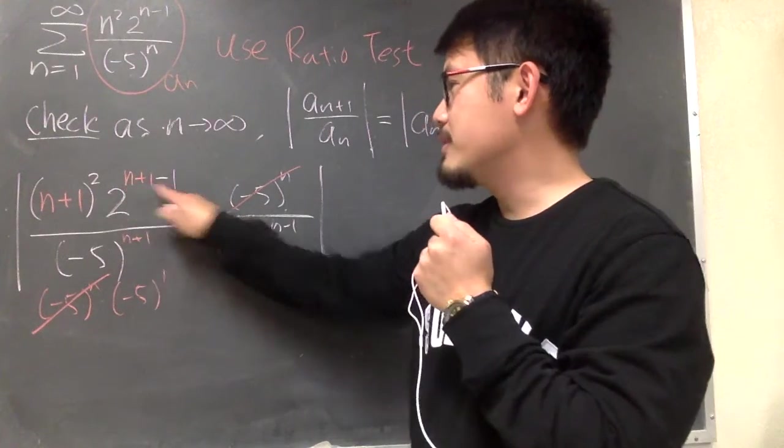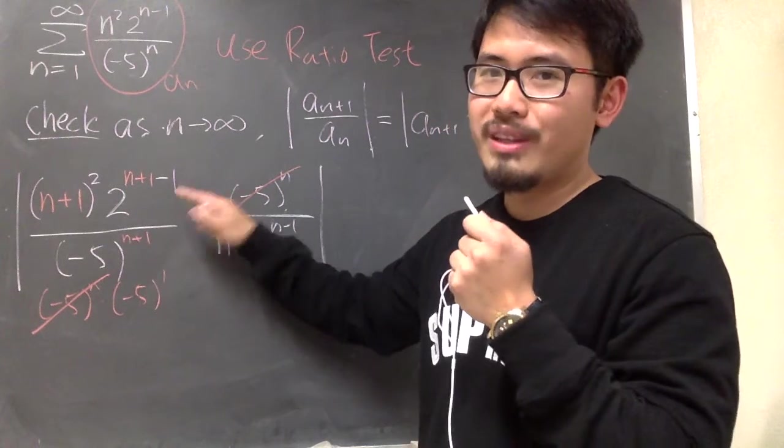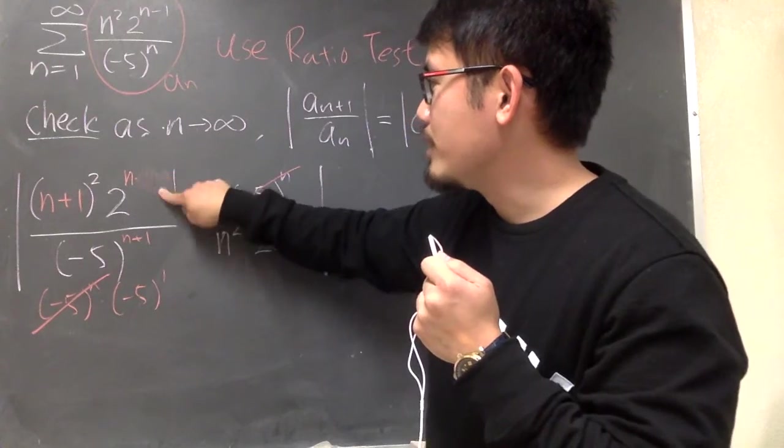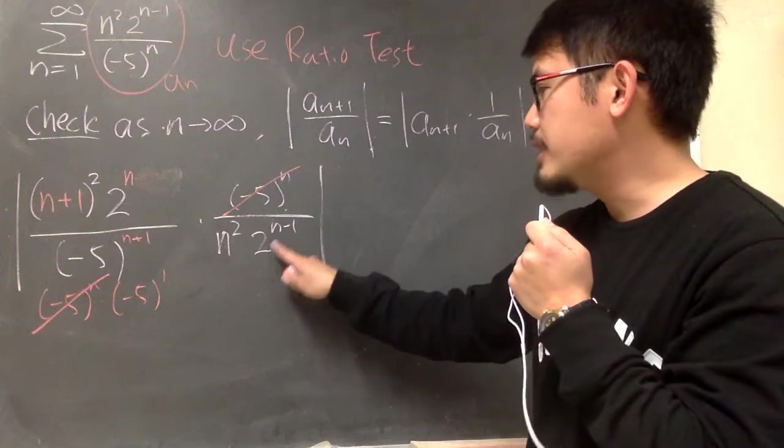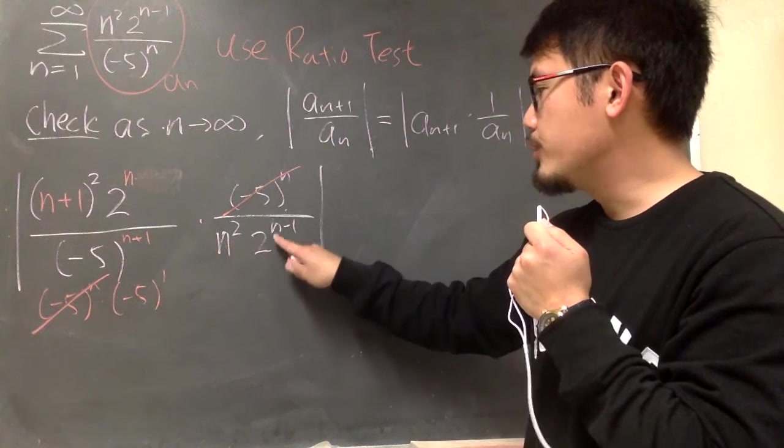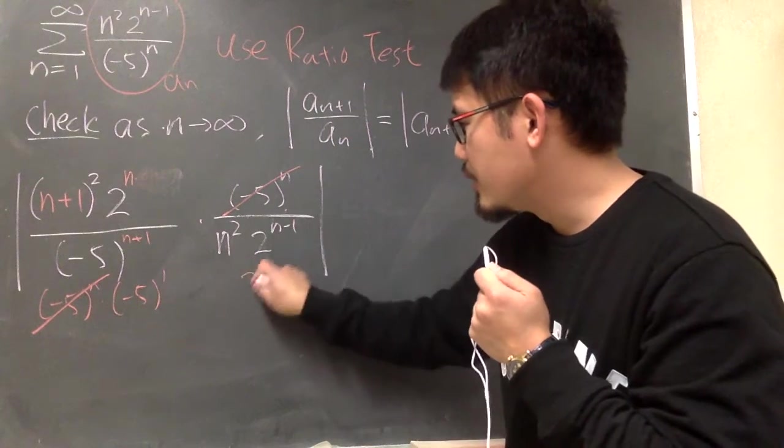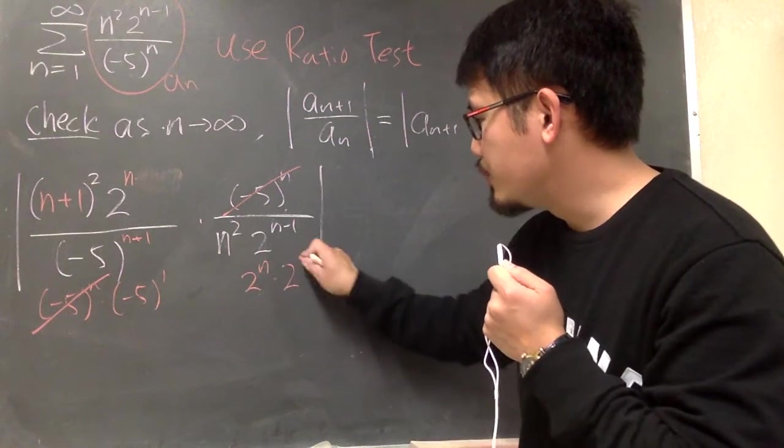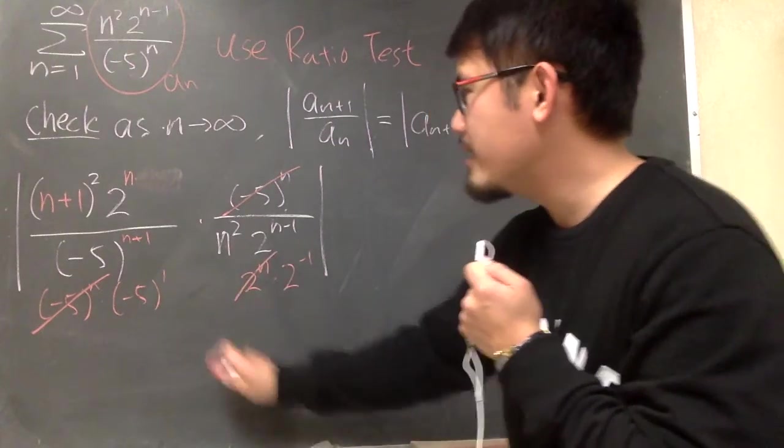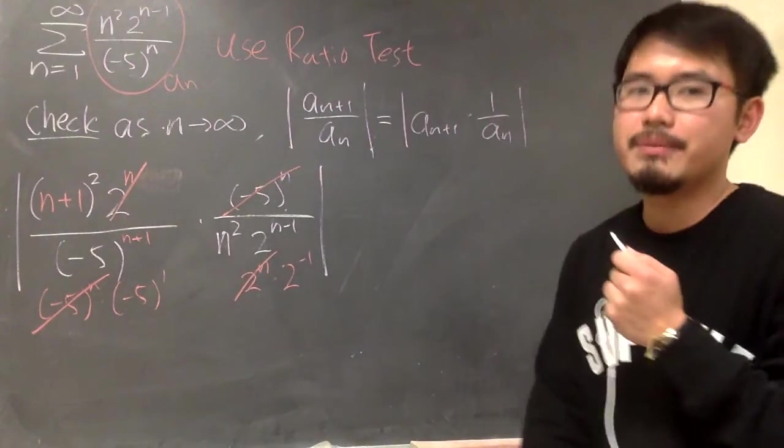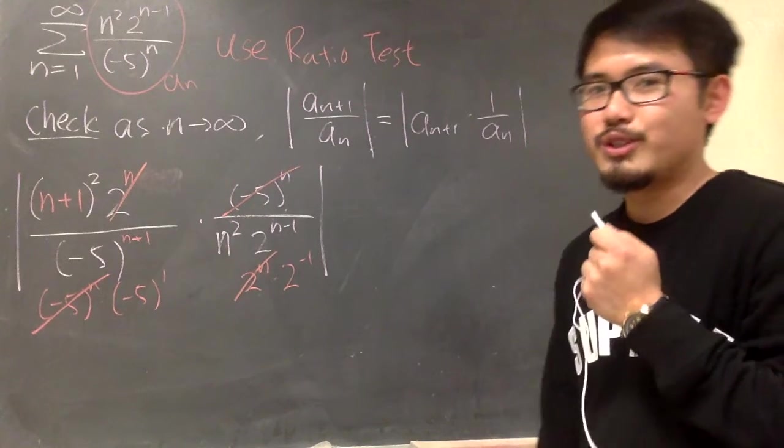Maybe I can also fix this for you guys. This is 2 to the n plus 1, minus 1. You know the plus 1, minus 1, just 0. So you have 2 to the n right here. But then, I can also look at this part here. This is 2 to the n minus 1 power. I can break this apart as 2 to the n times 2 to the negative 1. So I can cancel this 2 to the n with that 2 to the n.